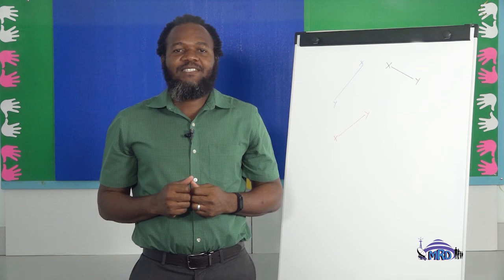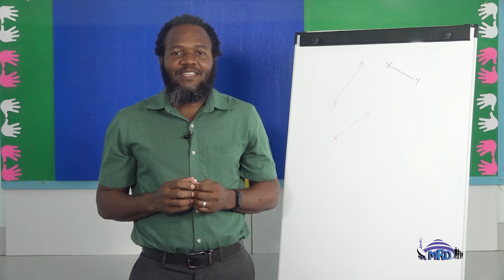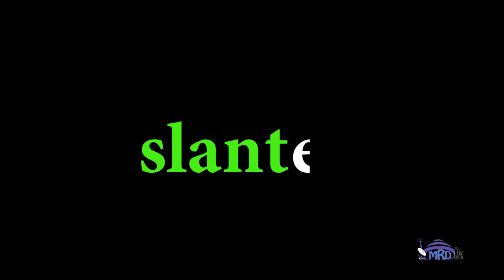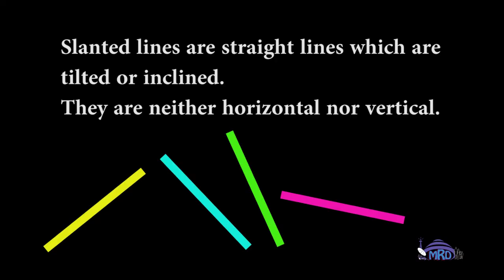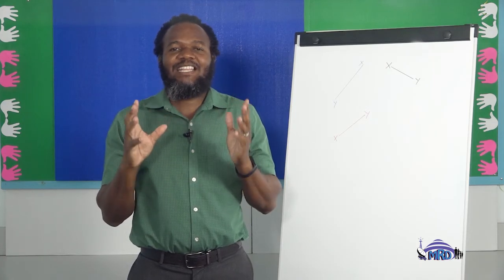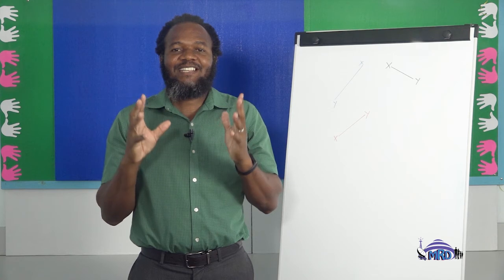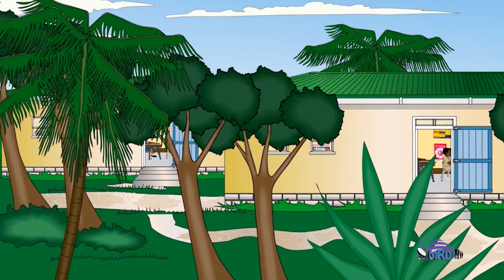Let's recap what we have done so far. Let us spell the word slanted again: S-L-A-N-T, slant, E-D, slanted. Slanted lines are straight lines which are tilted or inclined — they are neither horizontal nor vertical. That's all for today. Learning about slanted lines was so much fun. Until next time, it's bye from Uncle Terry.